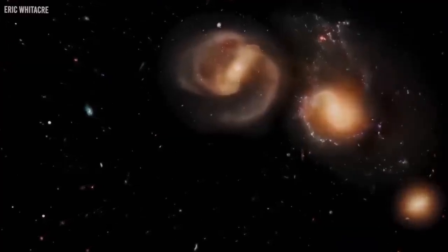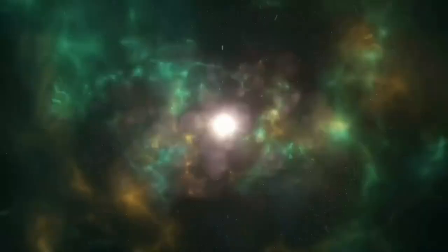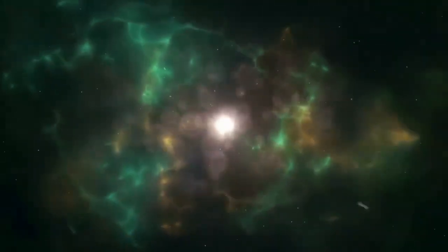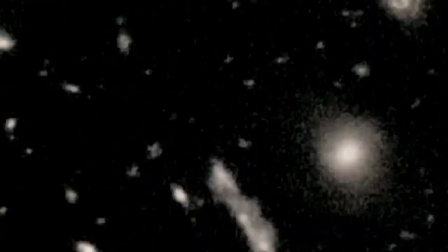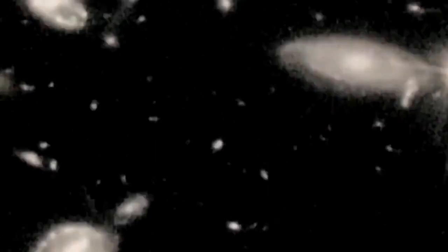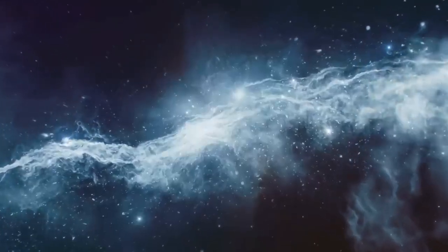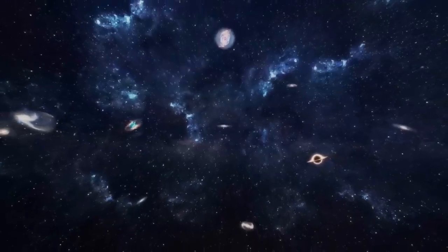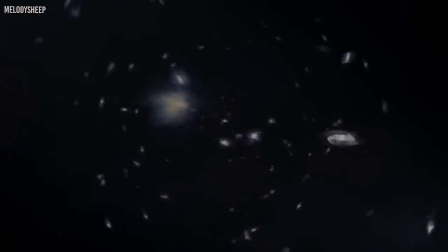This discovery has upended our understanding of early galaxies, challenging previous models that suggested galaxies began as small clusters of stars and dust, gradually growing over time. Dubbed 'universe breakers,' these gigantic galaxies defy 99% of our existing models. When researchers first encountered them in the Webb's data and high-resolution images, they were stunned. The sudden emergence of these colossal objects, appearing as significant points of light, left scientists questioning their own interpretations. Through spectroscopic analysis, scientists hoped to unravel more about these galaxies, including their composition, size, and distance from Earth.